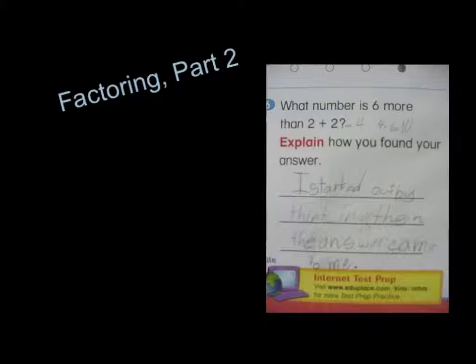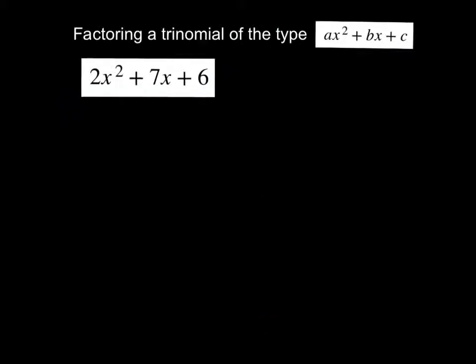We're going to factor a trinomial of the type ax² + bx + c. In this situation that a value is not equal to 1, so we're looking at a situation where instead of having one x² you have some coefficient on the x² like in my example here.